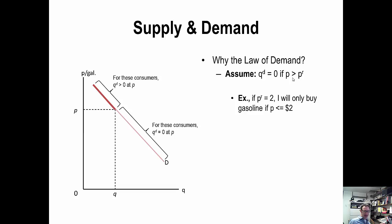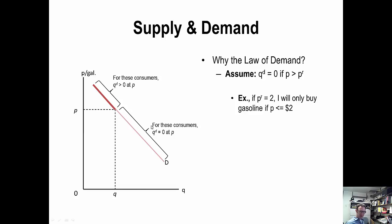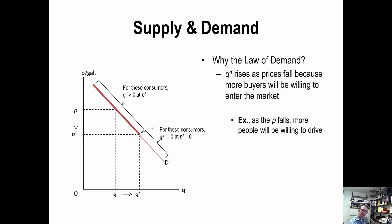As prices fall from P to P prime, movement along the curve shows that the new quantity demanded is Q prime — a much larger number. Price falls, quantity demanded increases. Why? As prices fall, they naturally fall below more and more buyers' reservation prices. Those buyers who were previously priced out of the market are now willing to make a purchase, so quantity demanded increases because there are more buyers in the market. That is why the demand curve is downward sloping.